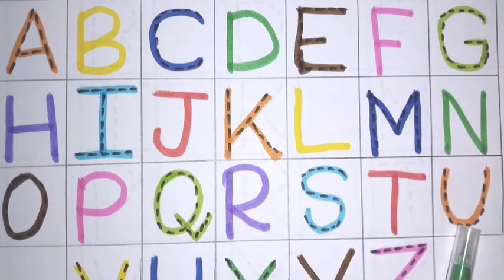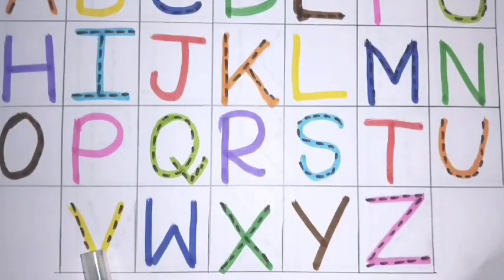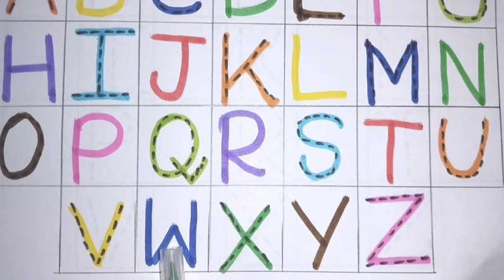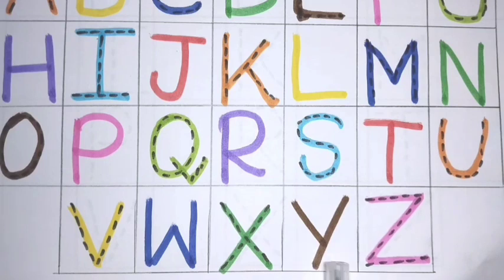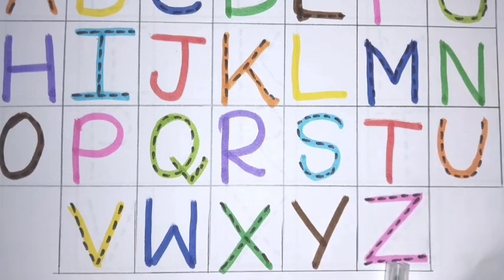U, U for uniform. V, V for van. W, W for watch. X, X for x-ray. Y, Y for yellow. Z, Z for zebra.